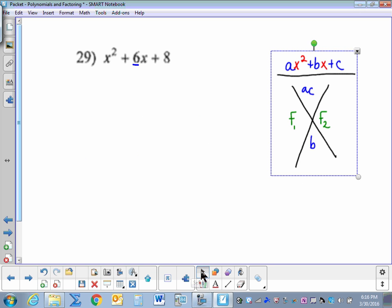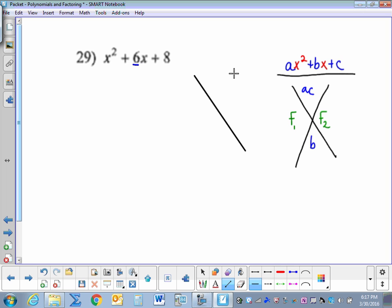So number 29, x squared plus 6x plus 8. The first thing I'll do is I'll draw an X. I'll then take a times c, so 1 times 8 is 8, and then I'll write b down here. So now I need the factors of 8, what two things multiply together to give me 8 and add to give me 6. So factors of 8 are 1 and 8, and 2 and 4. So 2 and 4 are my factors.